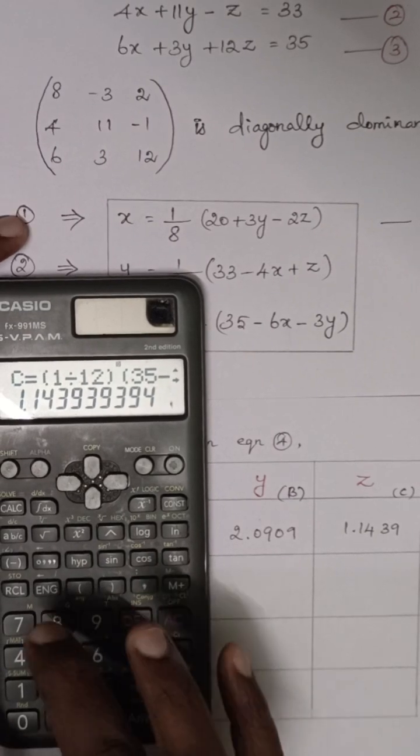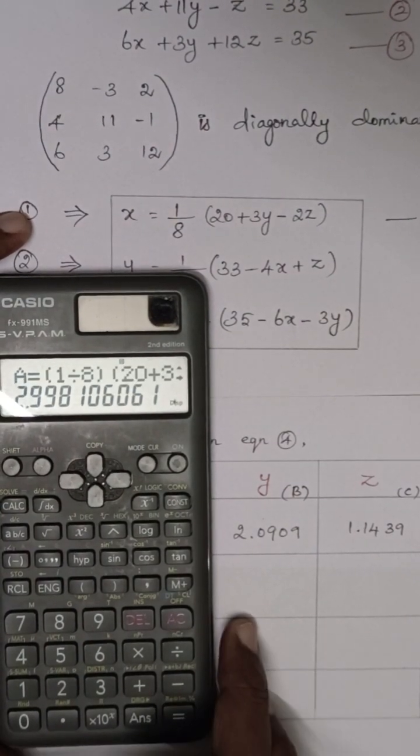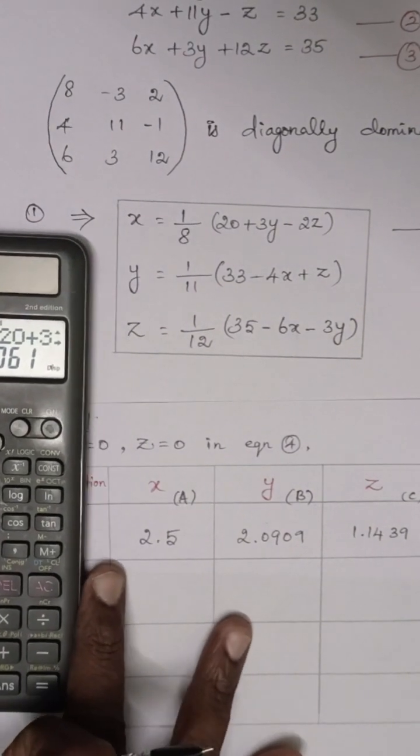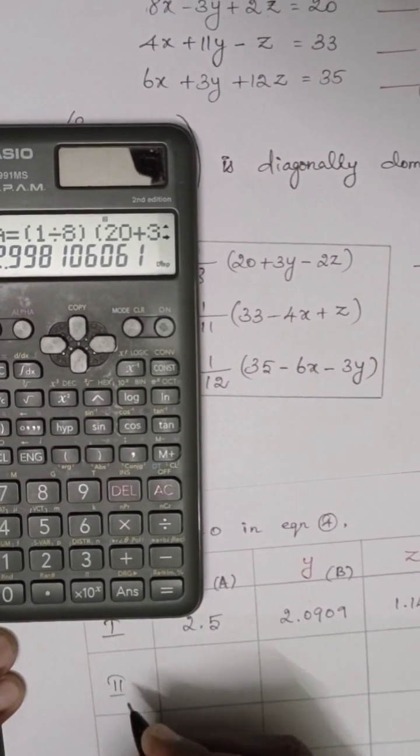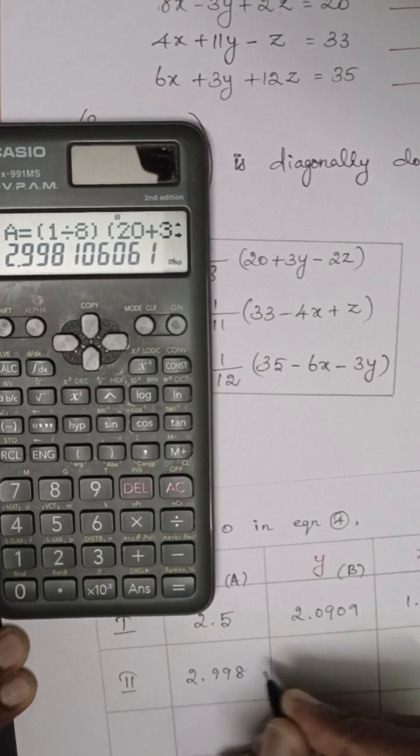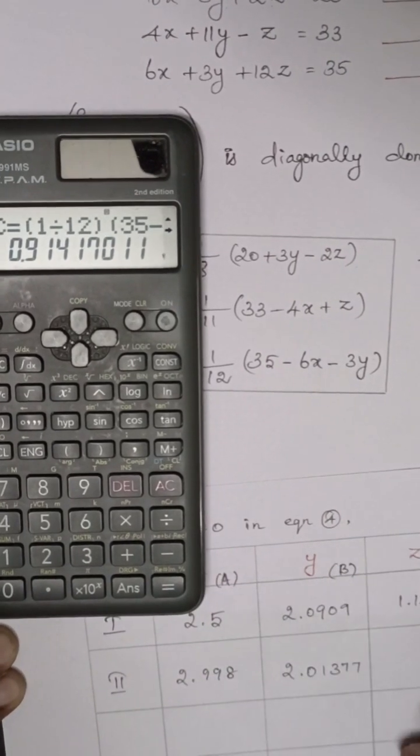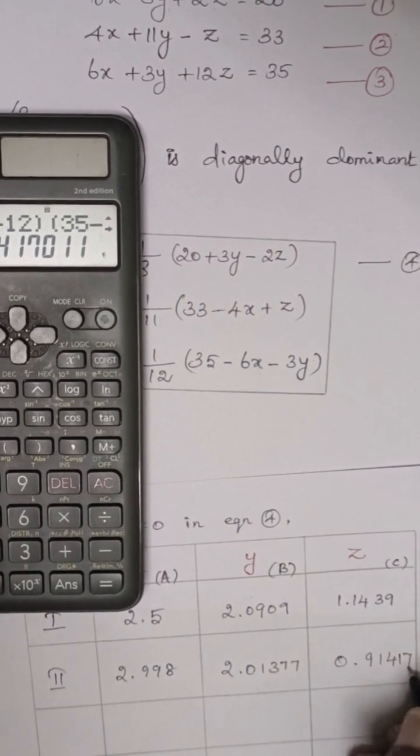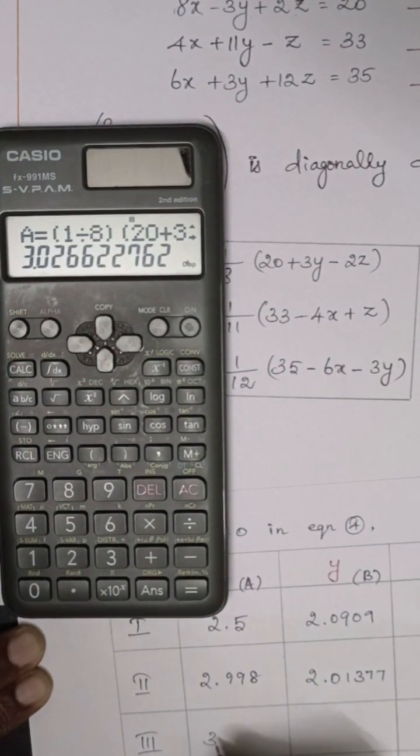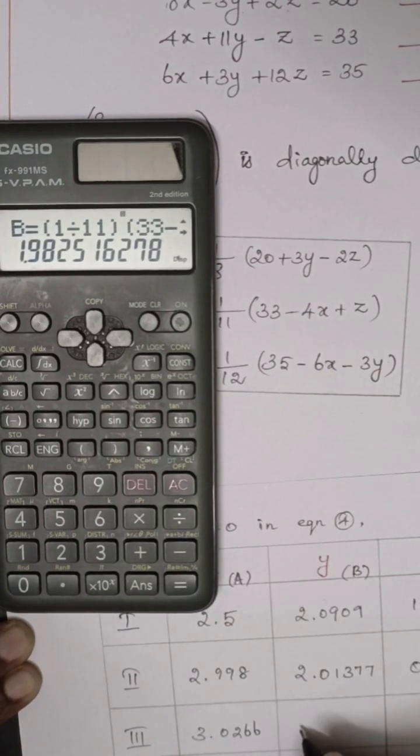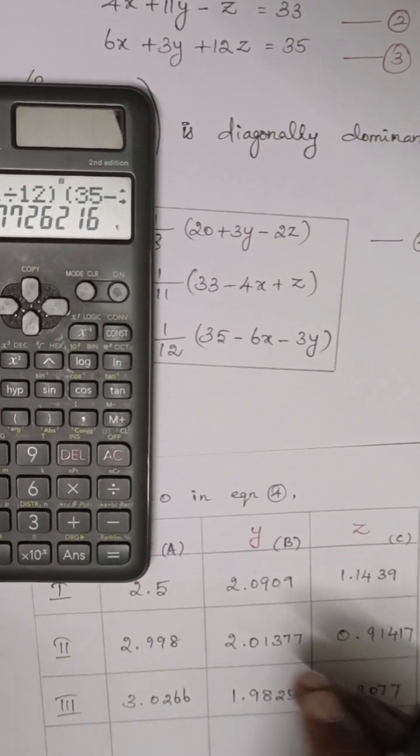In second iteration, again b value 2.90 automatically will come. Then c value second iteration. You can continue with the equal button. Again b, c third iteration. The values are 2.0166, b value is 1.9825, and c value is 0.9077.